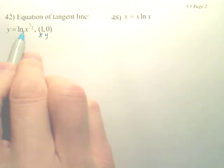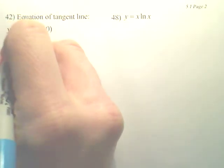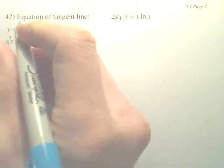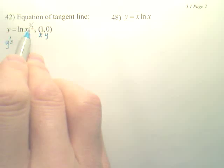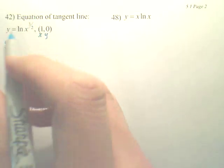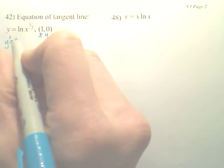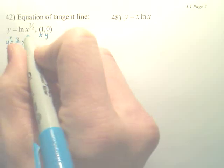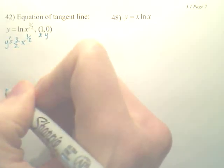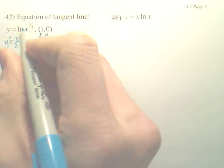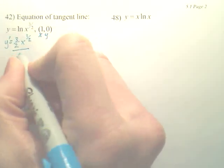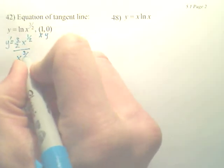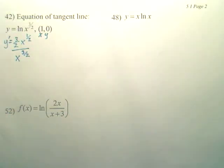Now, the derivative of this, the derivative of ln is u prime over u. So, the derivative of x to the 3 over 2 is 3 over 2x, and subtract 1 from that, you get 1 half. That's the derivative of the inside, over the inside. The derivative is simply, derive the inside, put it over the inside. Then, simplify.